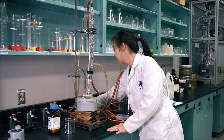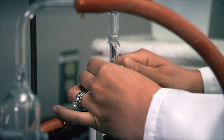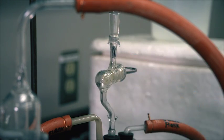Start water circulating through the condenser. Seal the system by closing the stopcock on top of the safety bottle.